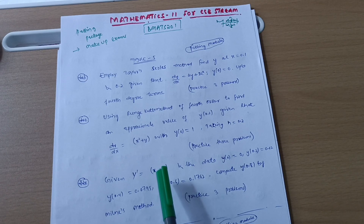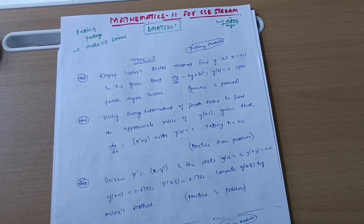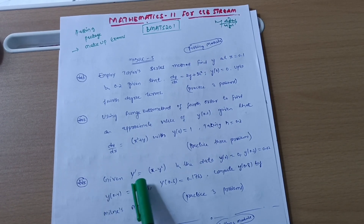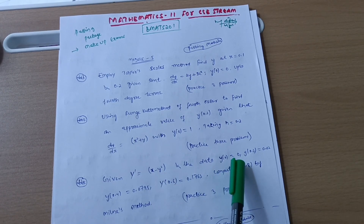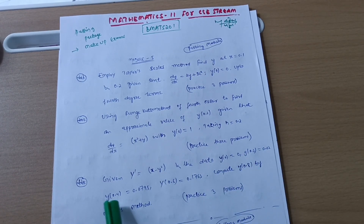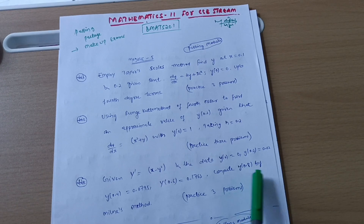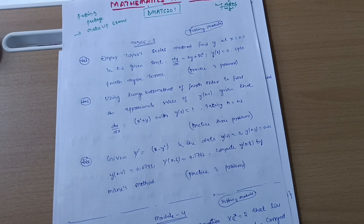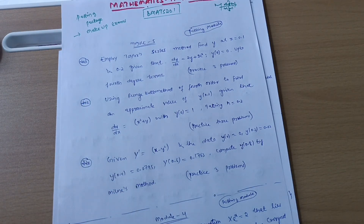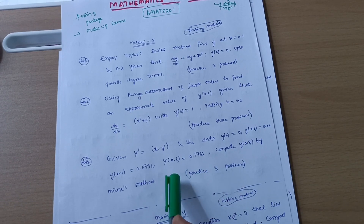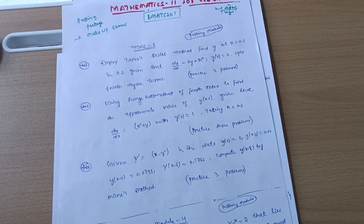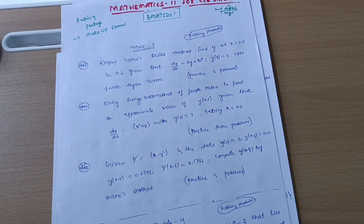In the examination, as you already know, they will provide you the handbook so you don't need to remember the formulas — you just need to practice. The third concept is Milne's method: given y' = x − y² with data y(0) = 0, y(0.2) = 0.02, y(0.4) = 0.0795, y(0.6) = 0.1762, compute y(0.8). These questions are taken from previous makeup exam papers. Practice three problems on each of the three concepts — that's nine problems total — and you can get 20 marks easily in Module 5.